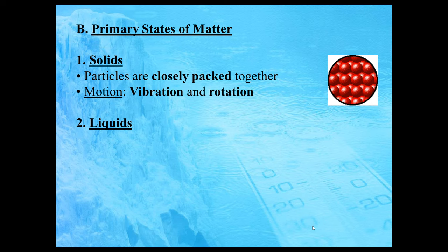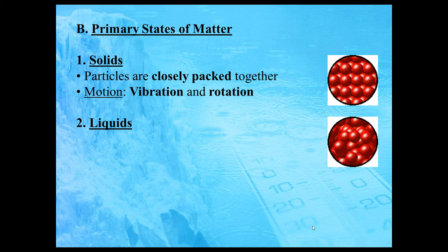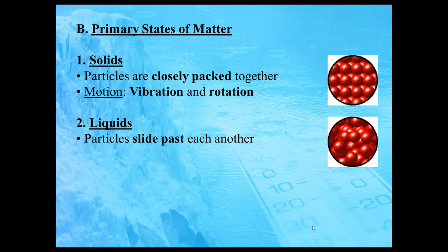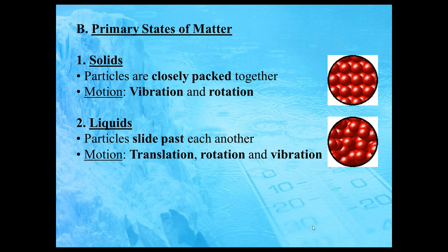The second state of matter is liquids. In this animation, the particles are not quite as closely packed together — there's a little bit more space between them. The particles are actually moving from point A to point B, so they can undergo translational motion. The particles in a liquid slide past each other and can actually move around. They undergo translation, they also spin while doing this, and while spinning they also slightly vibrate, having those small little oscillations.